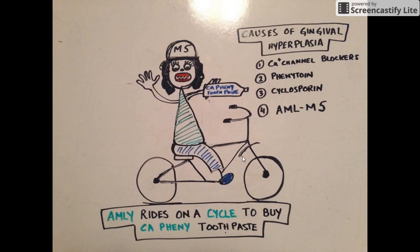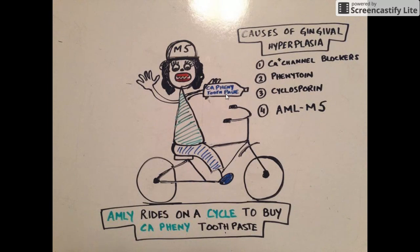She is riding a cycle, so 'cycle' depicts cyclosporine — gingival hyperplasia is associated with cyclosporine. The toothpaste named 'Calcium Fenni Toothpaste' means gingival hyperplasia is associated with calcium channel blockers, like nifedipine and verapamil, and also with phenytoin. So 'Calcium Fenni Toothpaste' stands for calcium channel blockers and phenytoin.